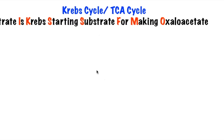Today we'll be talking about the Krebs cycle, or we call it TCA cycle. The mnemonic I use to remember this is: 'Citrate Is Krebs' Starting Substrate For Making Oxaloacetate.' The first substrate is number one, so I'm going to write here: citrate.